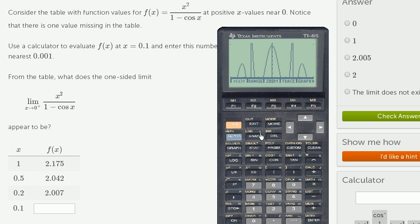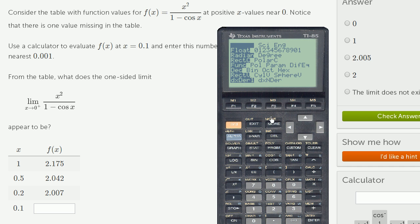Get my calculator out. So I want to evaluate x squared over 1 minus cosine of x when x is equal to 0.1. Let me actually verify that I'm in radian mode, because otherwise I might get a strange answer. So I am in radian mode.